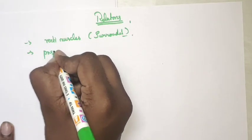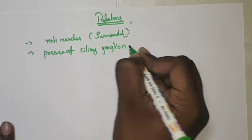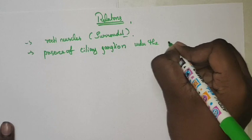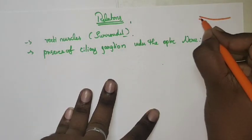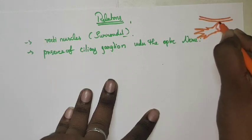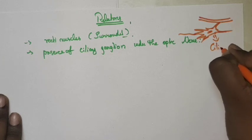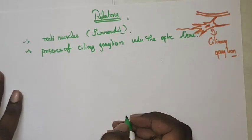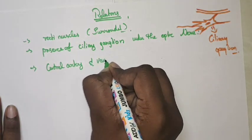The second relation is the presence of the ciliary ganglion. The course of the optic nerve will have a connection with the ciliary ganglion. So the first two relations are: surrounded by recti muscles, and the connection with the ciliary ganglion.